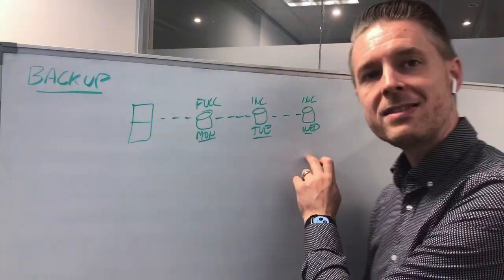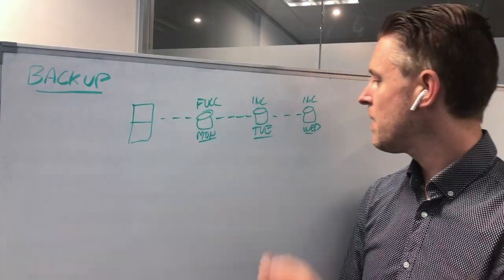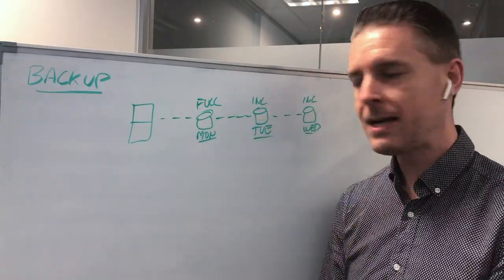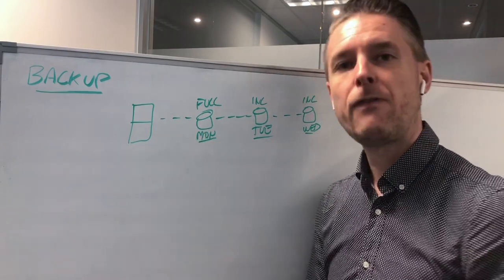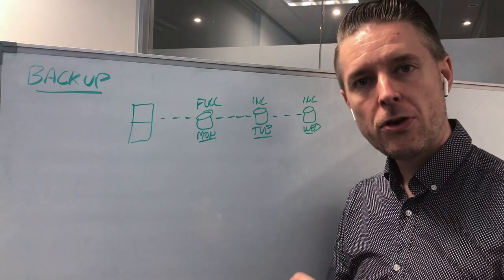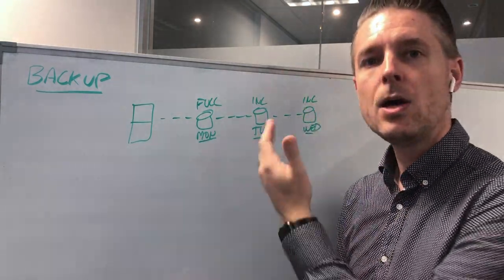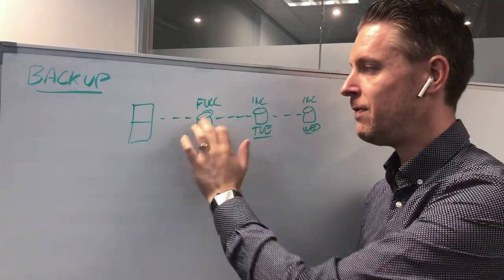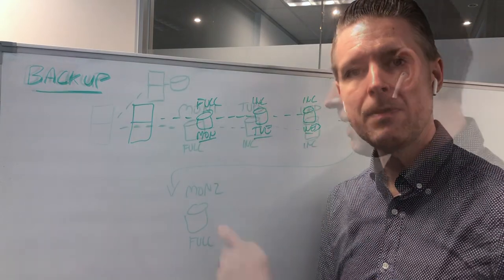It will not touch everything else because the first full backup already has copies covering that. The Wednesday backup will also be an incremental, which only references the changes from the last incremental — which itself references the first full backup. That same pattern continues into Thursday: it references the last incremental (Wednesday), which references Tuesday's incremental, which references the first full backup on Monday.